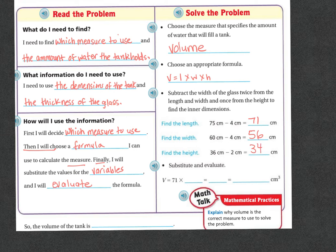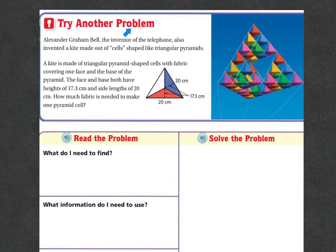So volume equals 71 times 56 times 34 and 71 times 56 times 34 is 135,184 centimeters cubed. Let's try another problem.